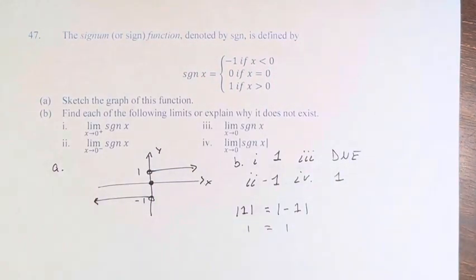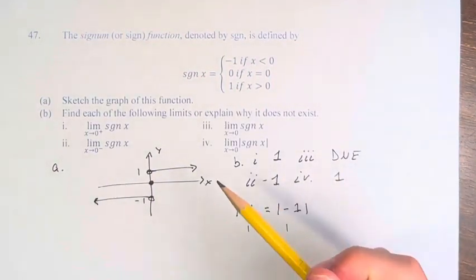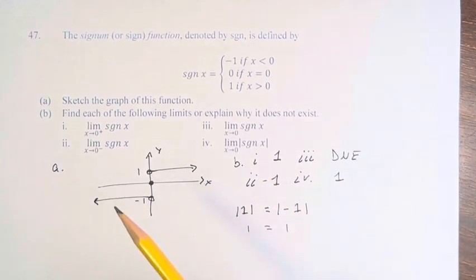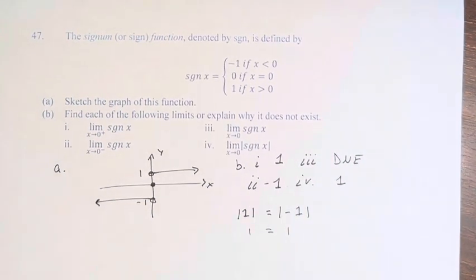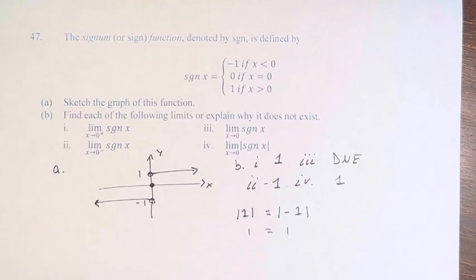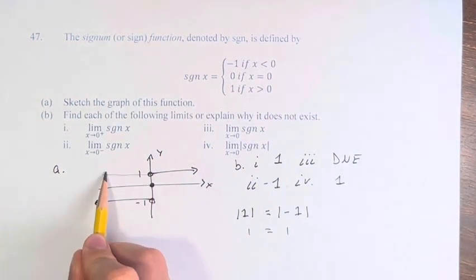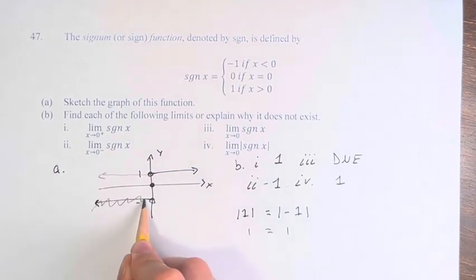You can see this by graphing the absolute value. Graphing the absolute value of any function is easy. If the value is greater than 0, it stays the same, and if it's less than 0, you reflect it over the axis. So it looks like this, and we would eliminate this.